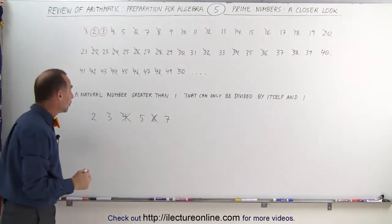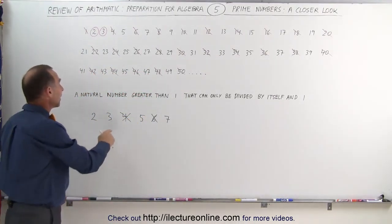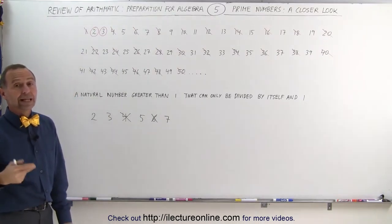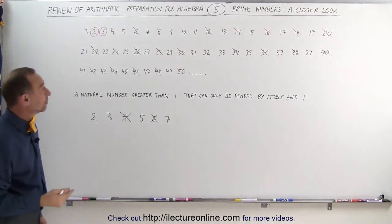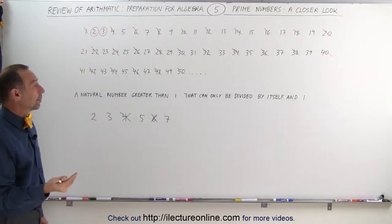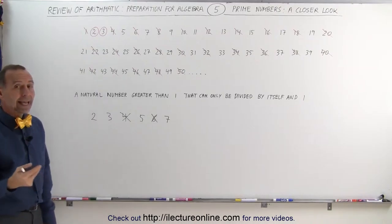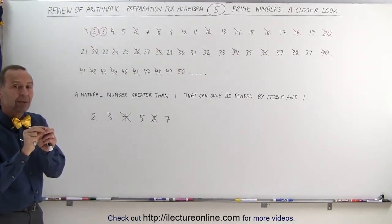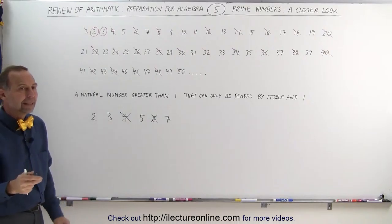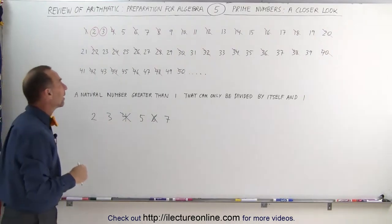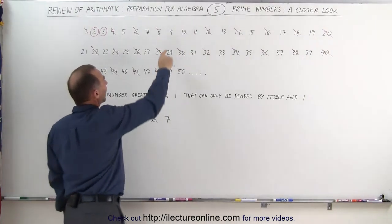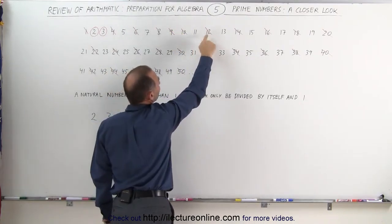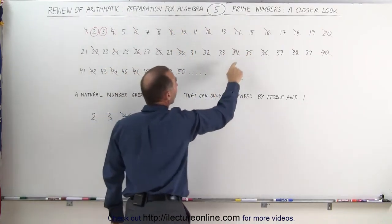Next, we look for numbers that can be divided by 3. If a number can be divided by 3, other than 1 and itself, then that's also not a prime number. Any number where the digits add up to a multiple of 3 is divisible by 3. For example, 9 is divisible by 3, and so is 12 — but 12 is an even number, so we can skip that.